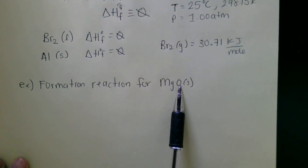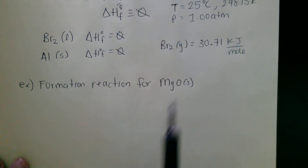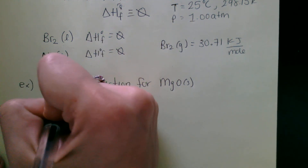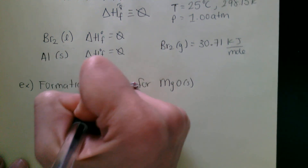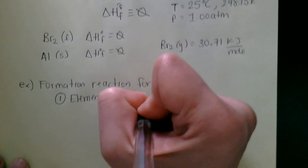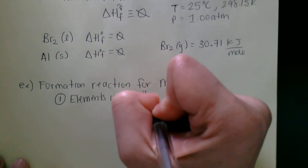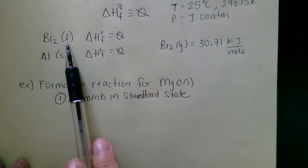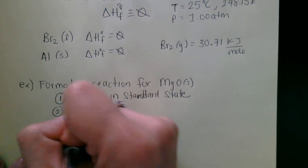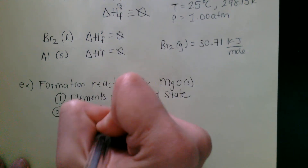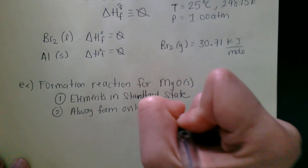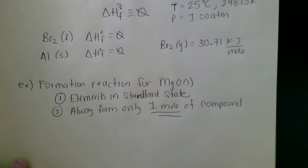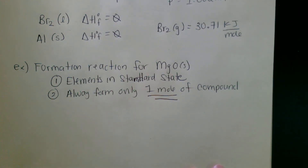We have two elements here: magnesium and oxygen. A formation reaction is going to produce our compound. When writing formation reactions, two rules: first, elements must be in their standard state. Second, we always form only one mole of the compound. Formation reactions are written to form only one mole of our compound.